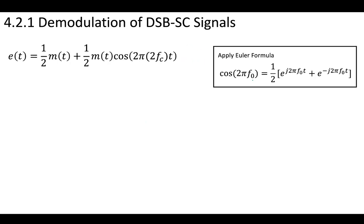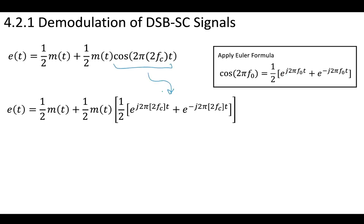We can now look at this and apply the Euler formula here. We know that our Euler formula looks like this, where we can write this cosine term as e to the j terms. We have taken this and put it down here. Notice that in our Euler formula we had f0 here, and in our case, our f0 is 2fc, so we've put that here and here.